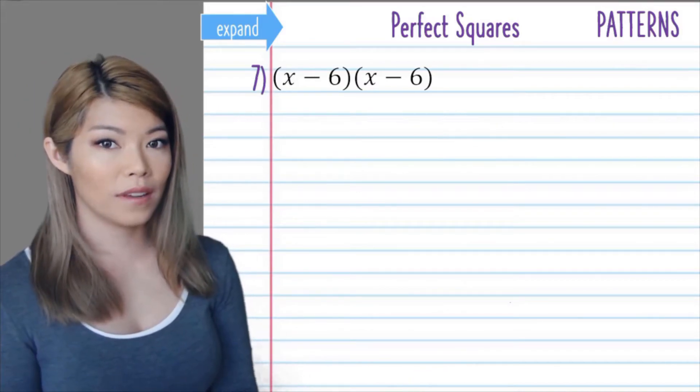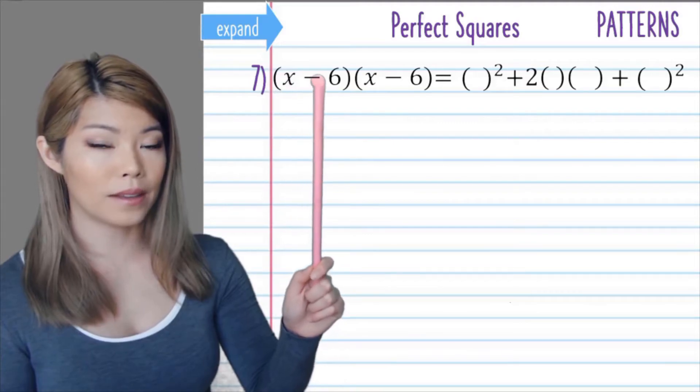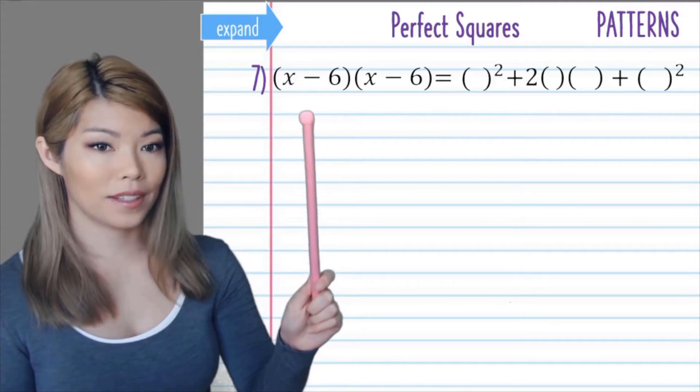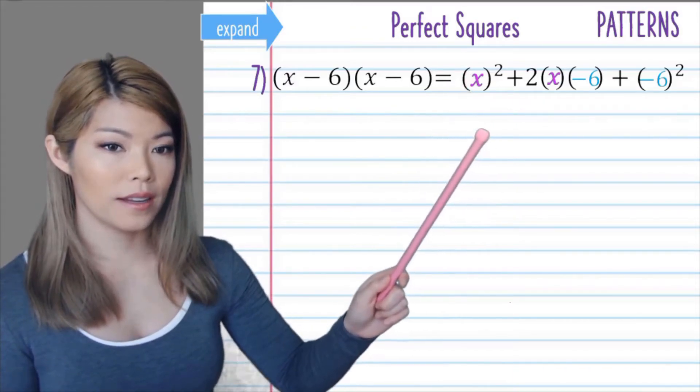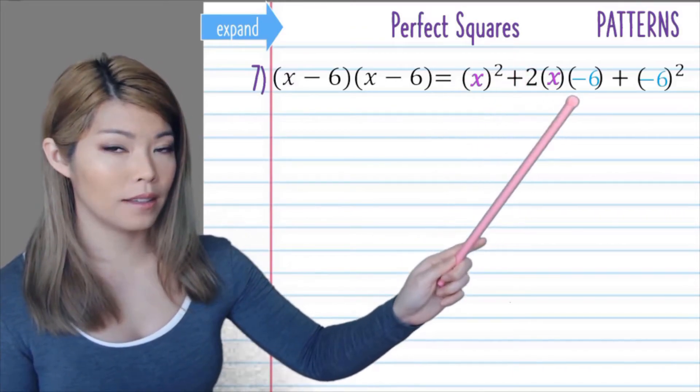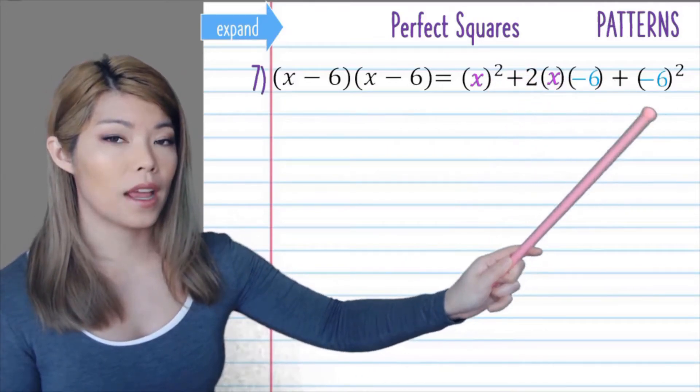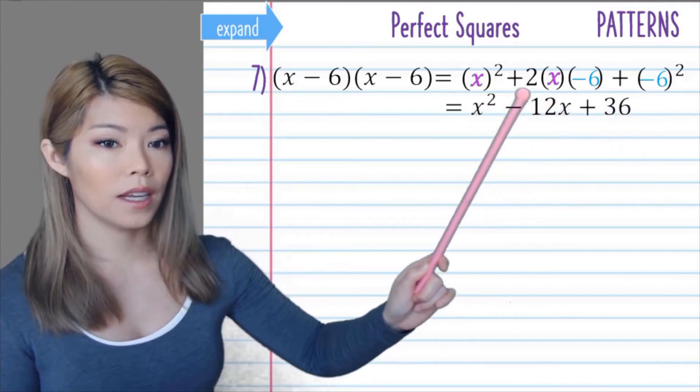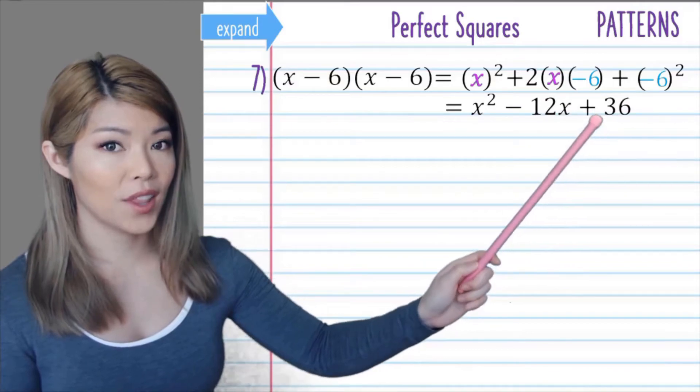What happens if you're given negative numbers? Now your first term is x, but your second term is negative 6. So you can still evaluate it the same way. We get x squared plus 2 times minus 6 is minus 12x. And the last term, negative times a negative is a positive. So we have x squared minus 12x and 6 squared is 36.